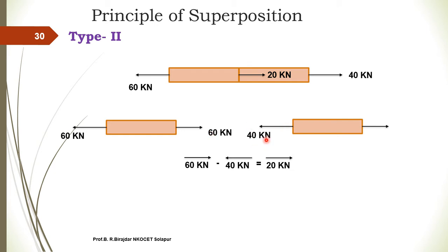When we join the first and second bodies, we get 20 kN towards the right-hand side. So on the left side of the second body, 40 kN acts. For the static equilibrium condition, an equal and opposite force of 40 kN must act on the right-hand side of the second body.